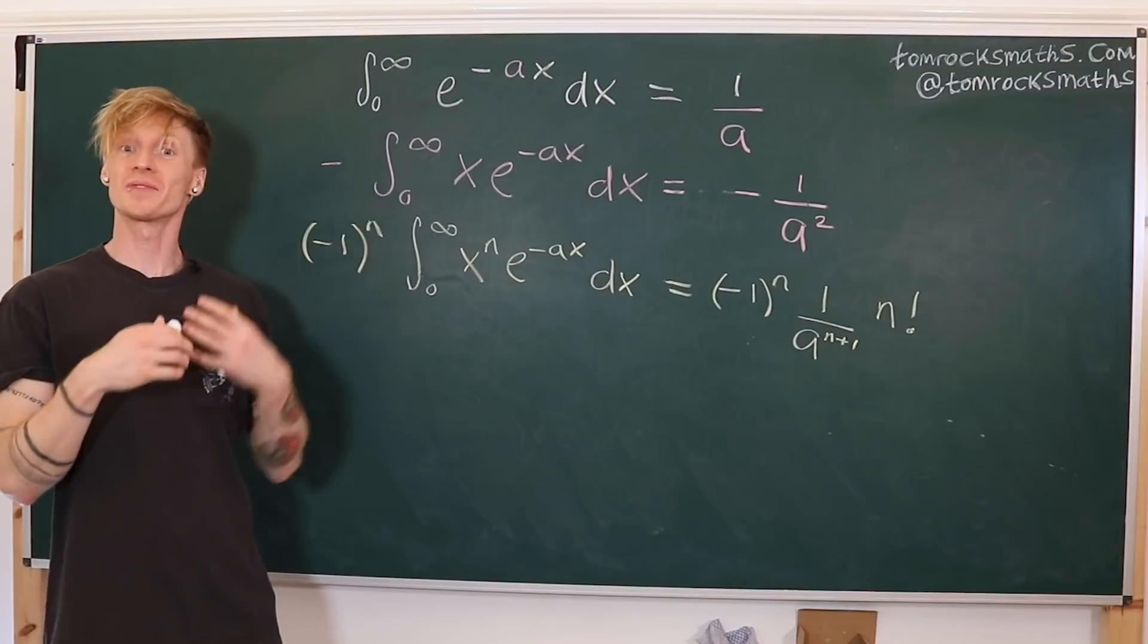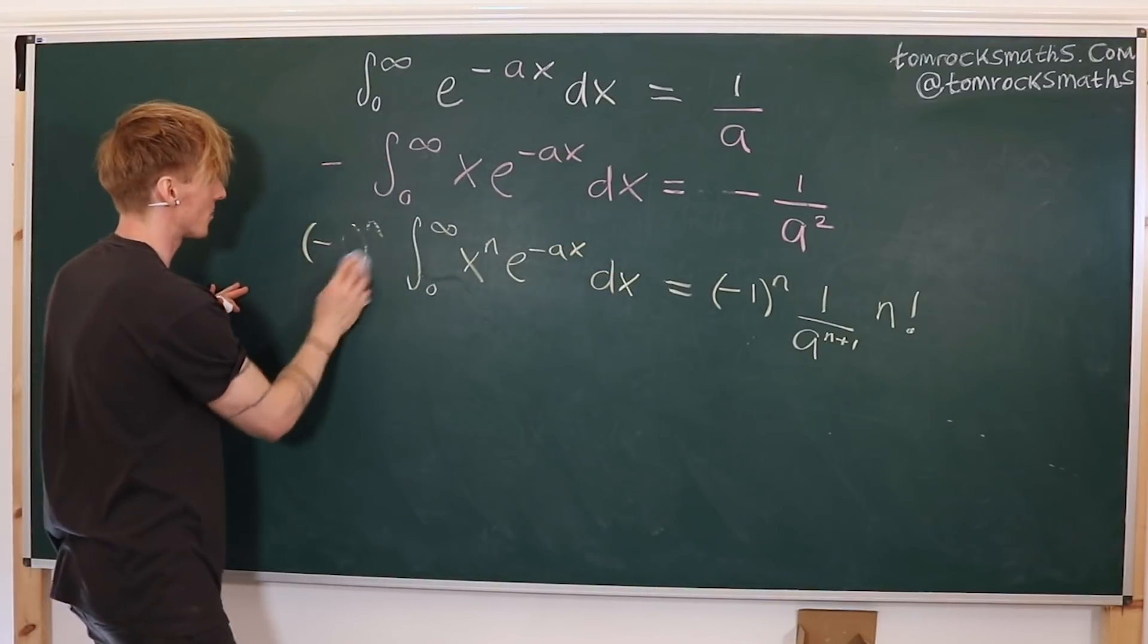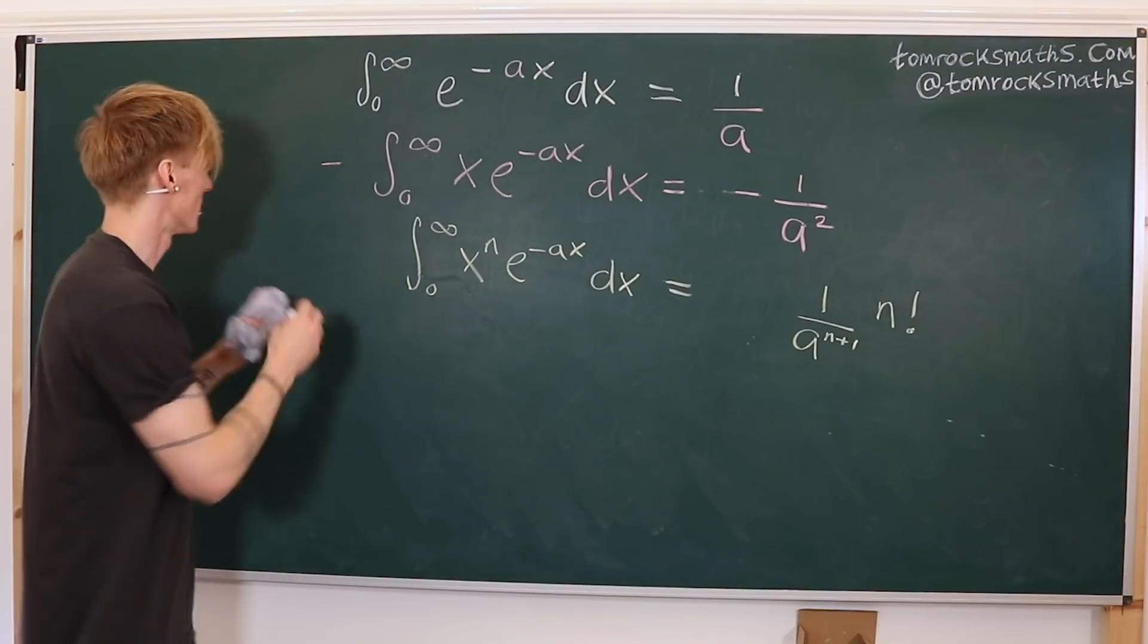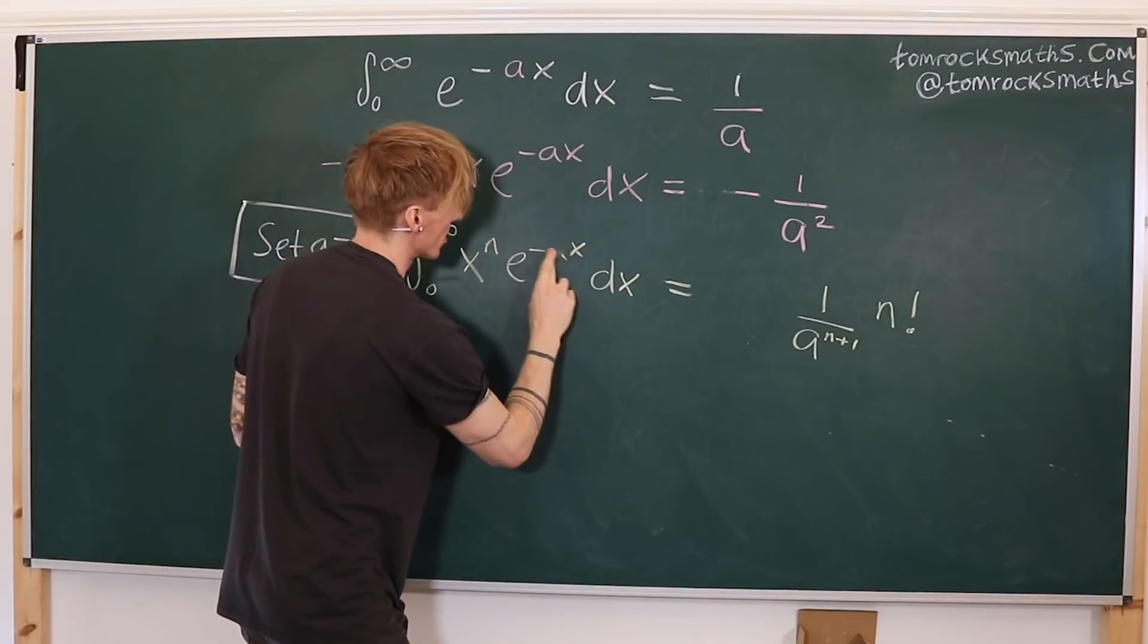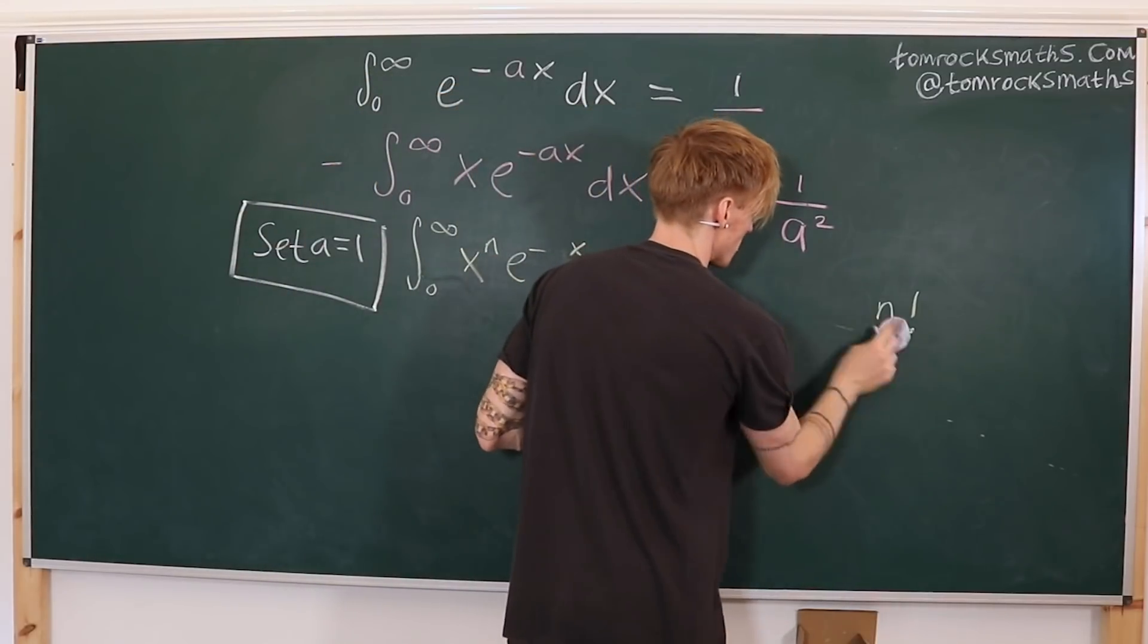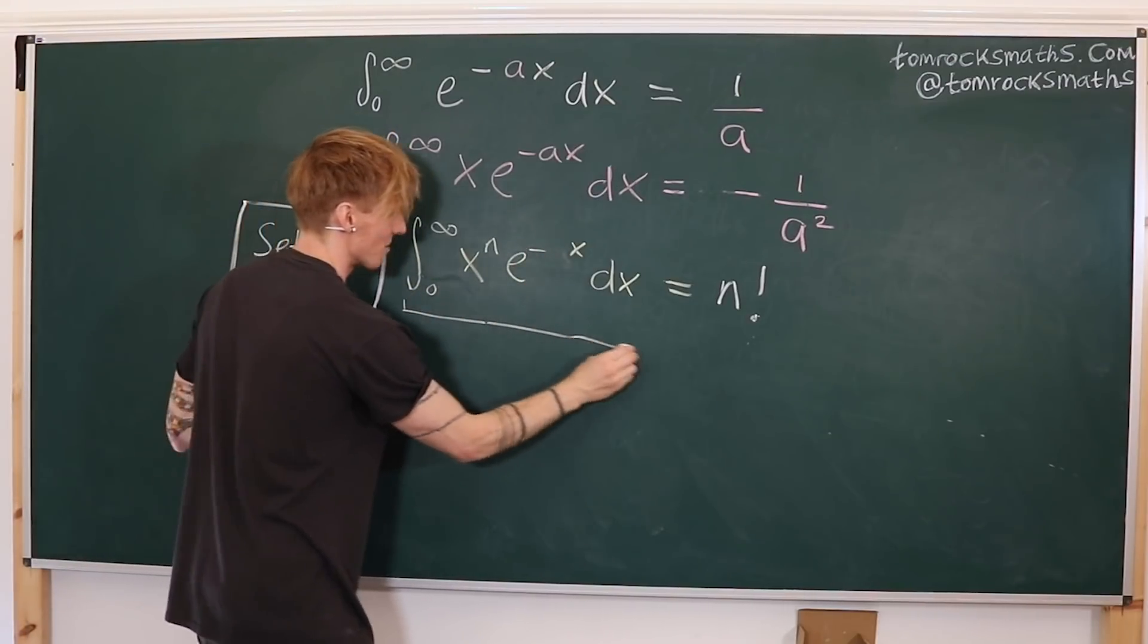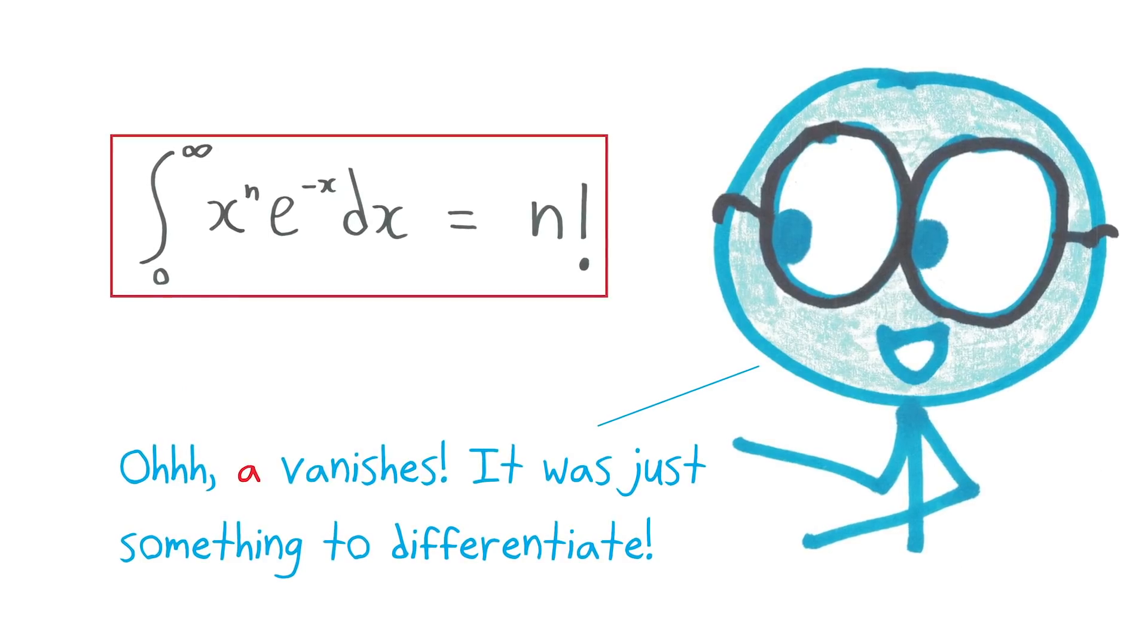Now the final step is just to simplify this expression. So first of all, we can cancel the minus 1 to the n term from both sides, as it's the same. And now what we want to do, very clever, is to actually now set a equal to 1. So if we set a equals 1 as our final step, this becomes a 1. And over here, we've got 1 over 1 to the power n plus 1, so that's just 1. So just to neater it all up, we're just left with n factorial. So setting a equal to 1 turns this into just e to the minus x. This is now our original integral. And the right hand side, all those powers of a disappear because a is 1, and we get n factorial.